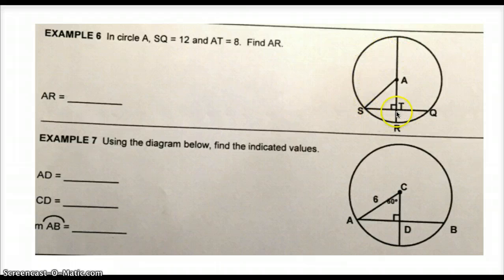In this particular example, we're told that the chord length SQ is 12 units long. We also know that from the center of the circle to the point where it's perpendicular, segment AT, is 8 units long. We're asked to find the length of segment AR. The first thing I want you to notice is that segment AR is actually a radius of this circle. And even though it doesn't look like it, AR and AS are actually congruent to each other because they're both radii of the same circle. Since this radius is perpendicular to this chord, you know that it bisects the chord. So that means from S to T has to be 6 units long.